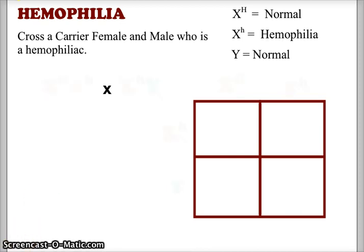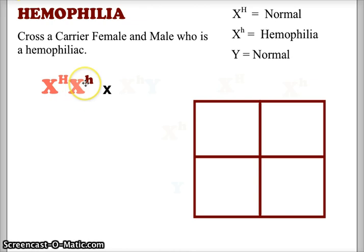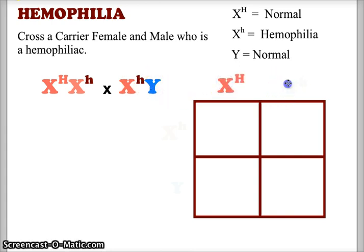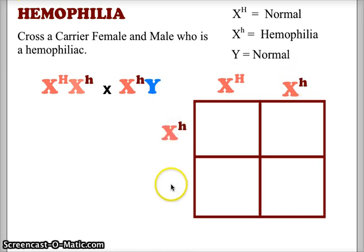Now let's cross a female who is a carrier, X^H X^h, and a male who is a hemophiliac, X^h Y. Segregating the alleles, we get X^H and X^h across the top columns, and X^h and Y on the two rows.